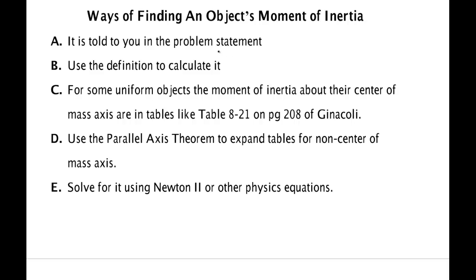In general there's a couple of ways that you'll find it. It may be told to you in a problem statement, something says the moment of inertia is four kilogram meters squared about a particular axis. This is easy, they've given it to you, it's just like telling you the mass is five kilograms, you just put it in.